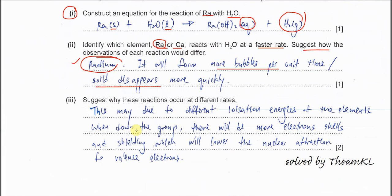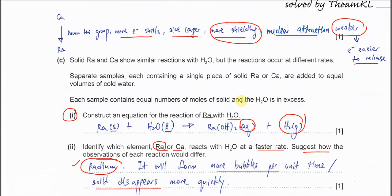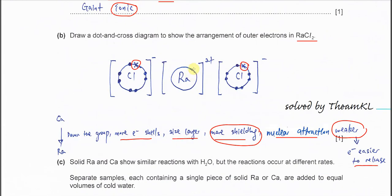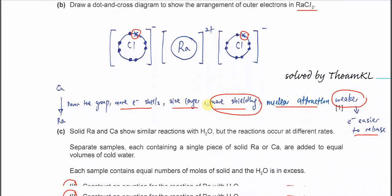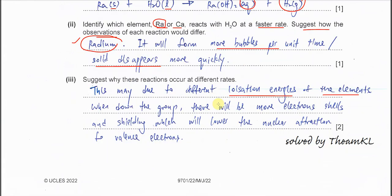Part 3. Suggest why these reactions occur at different rates. This is what I told you just now, the explanation. This may deal with different ionization energy of the elements, because the Group 2 elements will release their electrons while reacting with others. So that's why it involves this ionization energy.